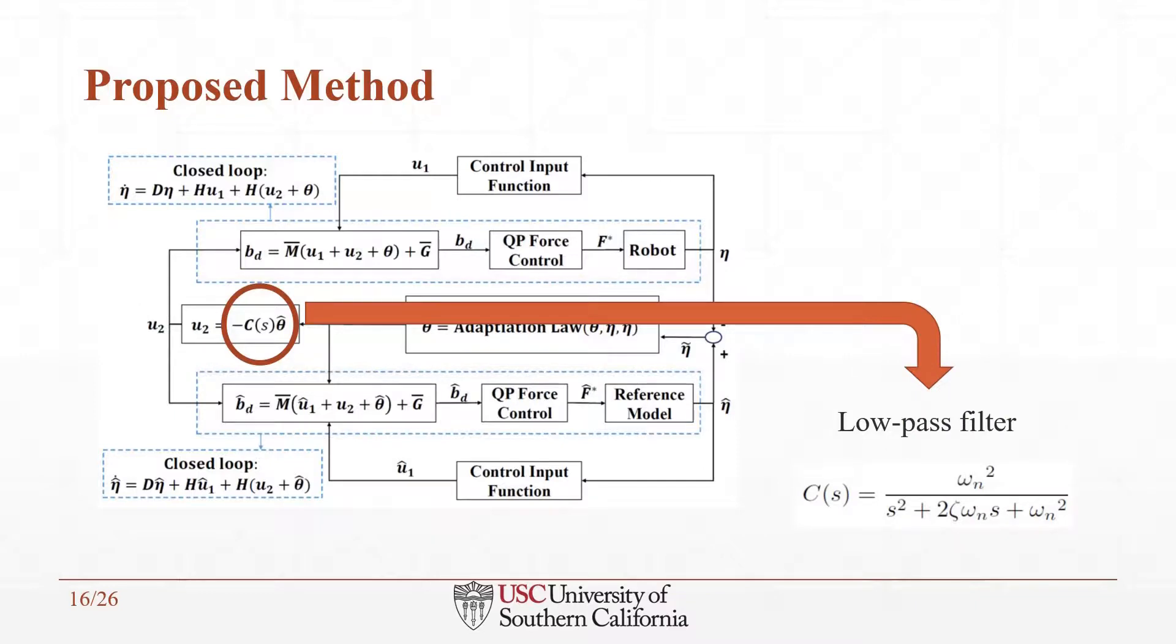Theta hat typically has a high frequency due to fast estimation in the adaptation law. For the reliability and robustness of the control system, it is essential to obtain smooth control signals, especially for robotics applications. Therefore, we apply a second-order low-pass filter with a magnitude of 1.